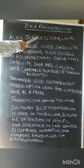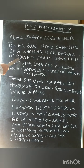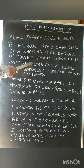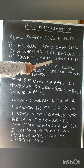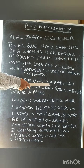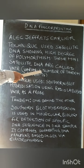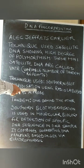Alec Jeffreys' earlier technique used satellite DNA showing a high degree of polymorphism. Mini-satellite DNA are called VNTR, which stands for Variable Number of Tandem Repeats. Tandem means one behind the other. The technique used is Southern blot hybridization using radio-labeled VNTR as a probe.